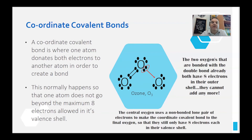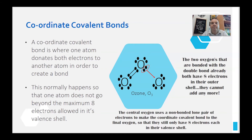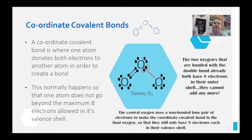So instead, one atom donates both electrons to create the bond — that's coordinate covalent bonding. Ozone is a great example. Each oxygen has six electrons, and they share up to create full outer shells. But if we try to bring in a third oxygen and share to make more double bonds, that oxygen would end up with ten electrons, which isn't allowed since it can't expand its octet. So that third oxygen donates both electrons to form a single bond, giving ozone a V-shape or bent structure: oxygen double-bond oxygen, single-bond oxygen.